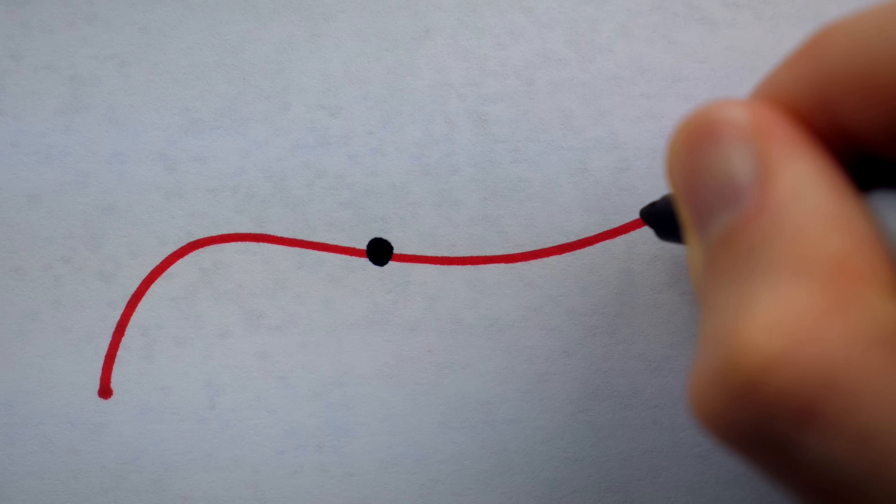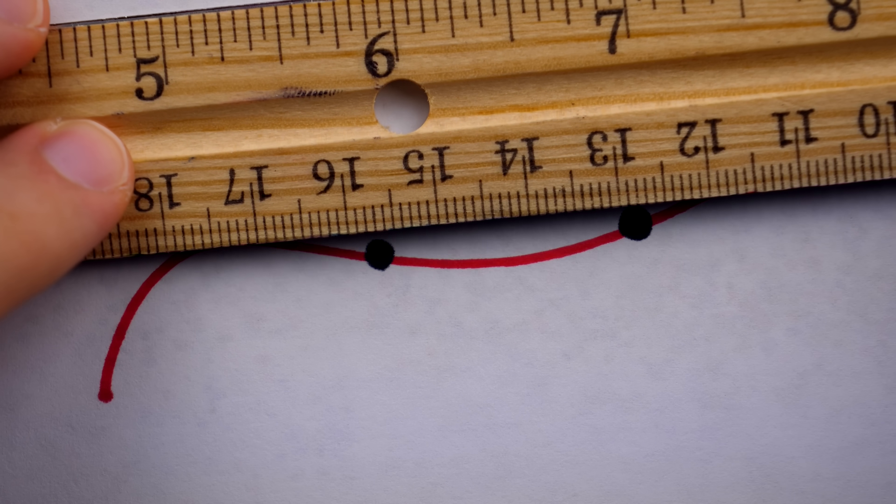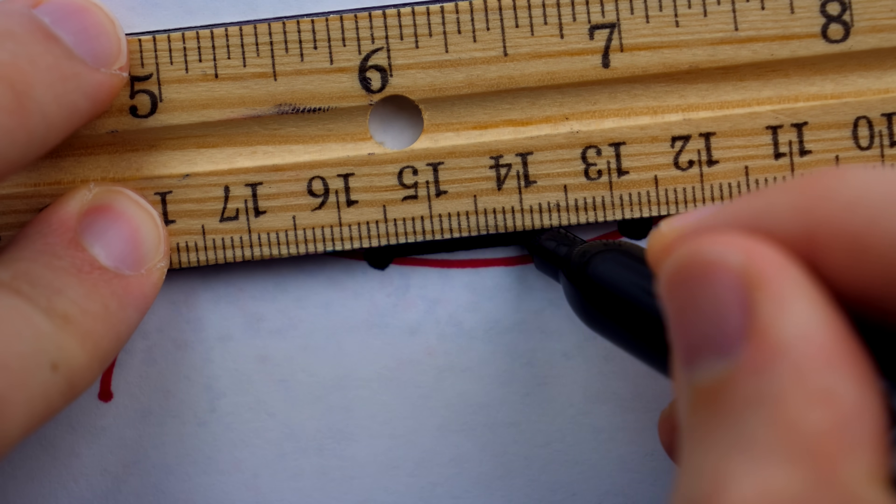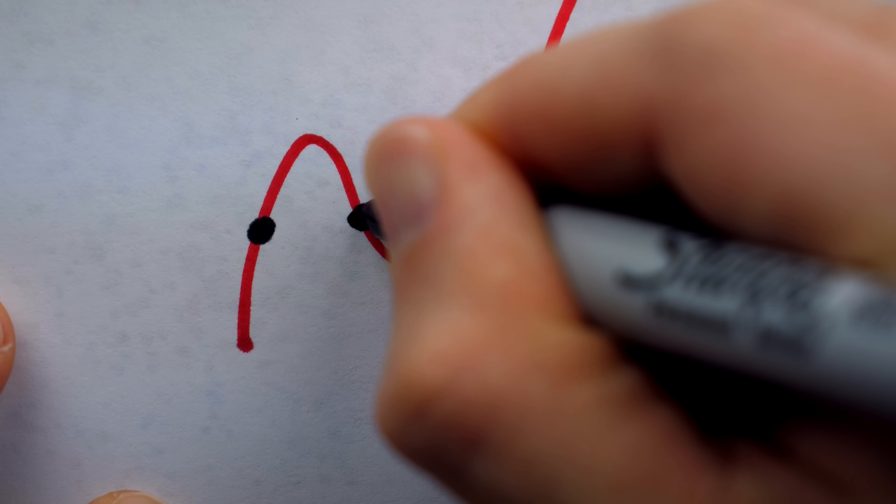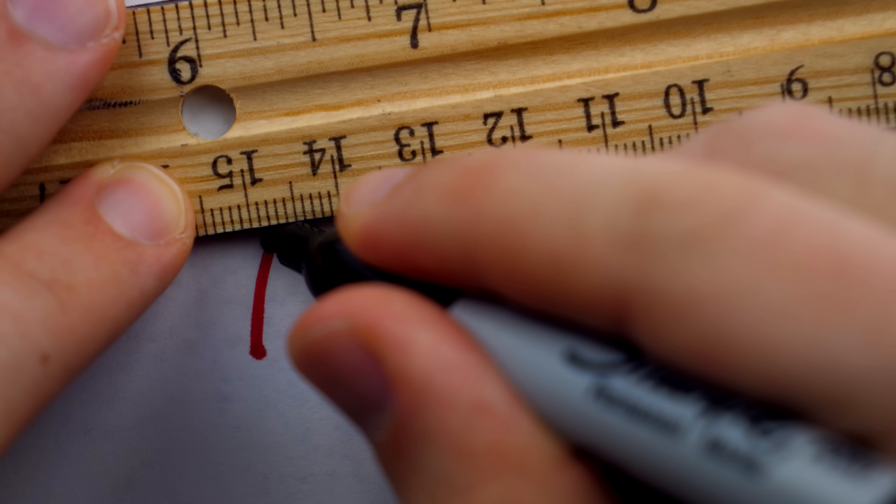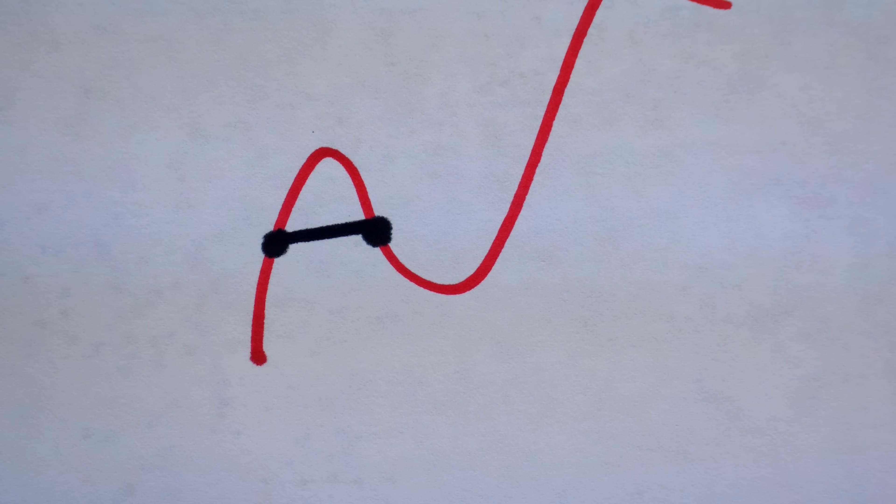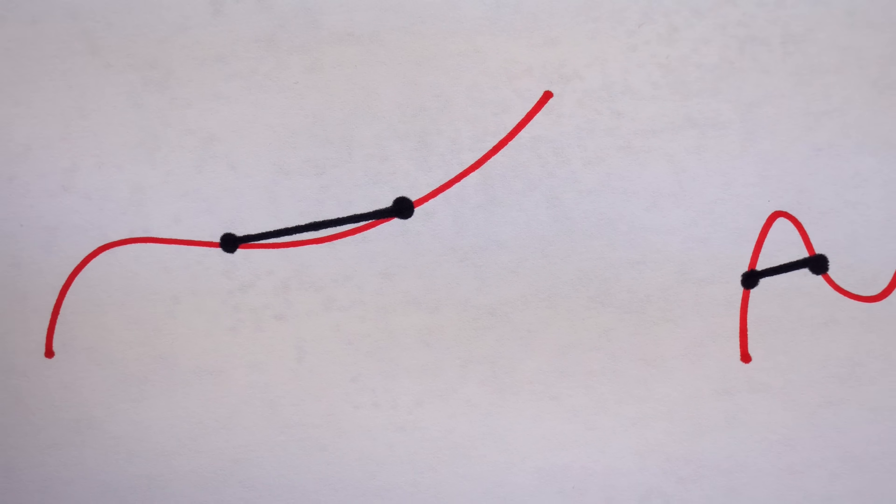This technique takes points from an unknown curve and assumes the curve behaves linearly between them. As long as a curve isn't too curvy between the points being used, it can provide a pretty good approximation. Even today, the technique is commonly used due to its great practicality.